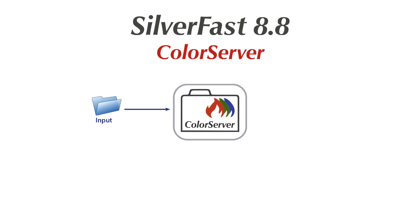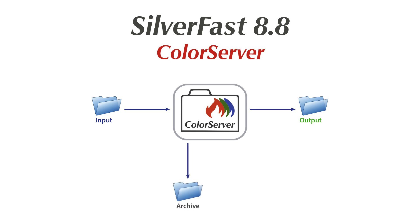Images that need to be processed are put in an input folder, then the ColorServer background process applies a certain set of image optimization rules to these files. Afterwards, the results can be found in an associated output folder, while the originals are all moved into an archive folder.